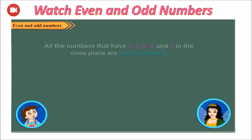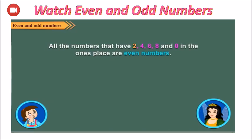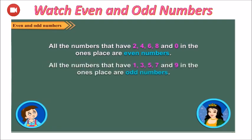All the numbers that have 2, 4, 6, 8 and 0 in the ones place are even numbers. All the numbers that have 1, 3, 5, 7 and 9 in the ones place are odd numbers.